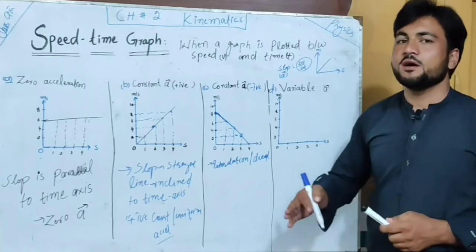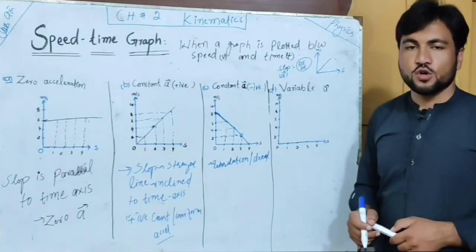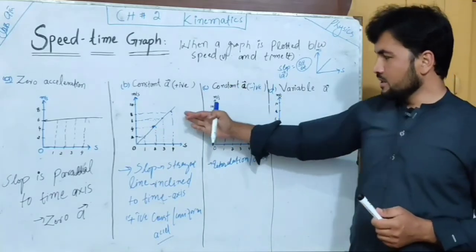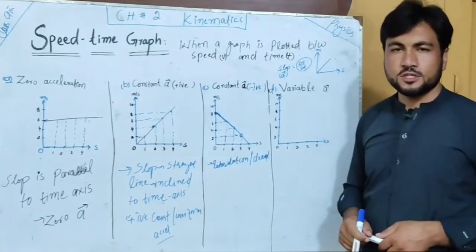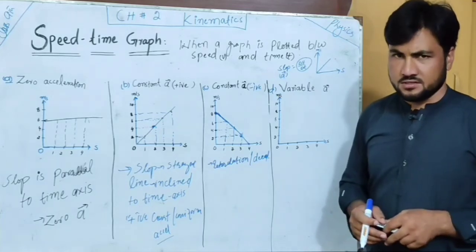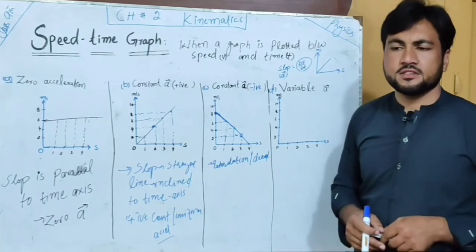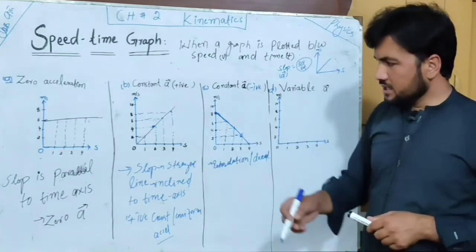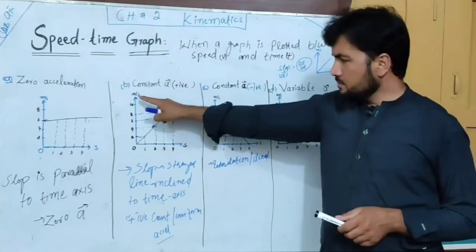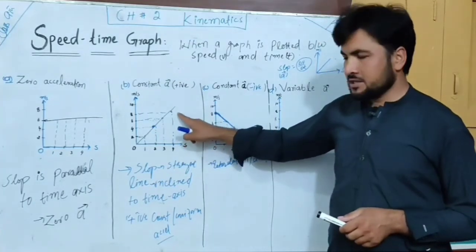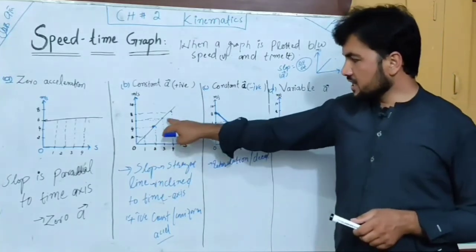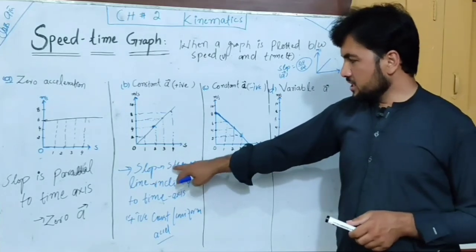Speed up and slow down — the first thing is the slope. A straight line represents a constant slope. Different situations give different kinds of acceleration. The slope of the speed-time graph gives the acceleration, also called the gradient.